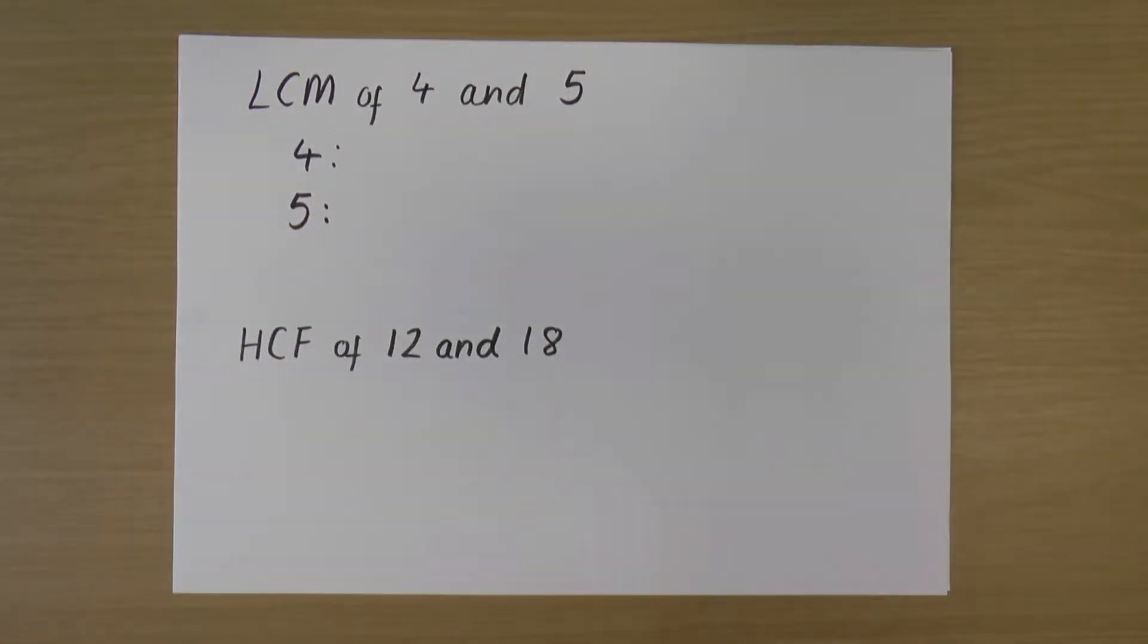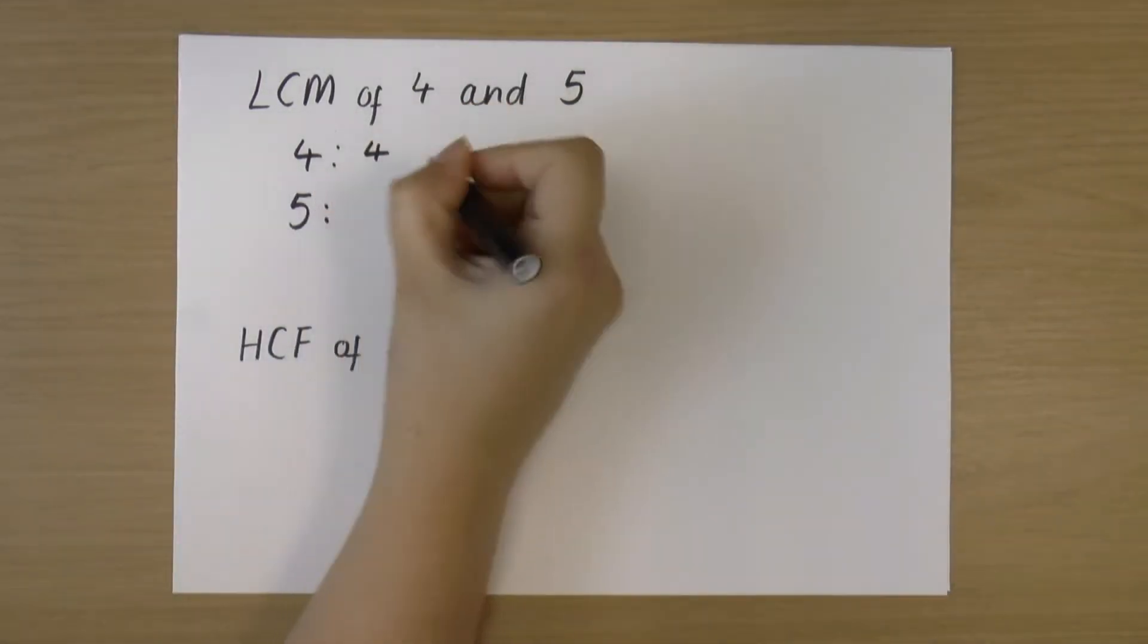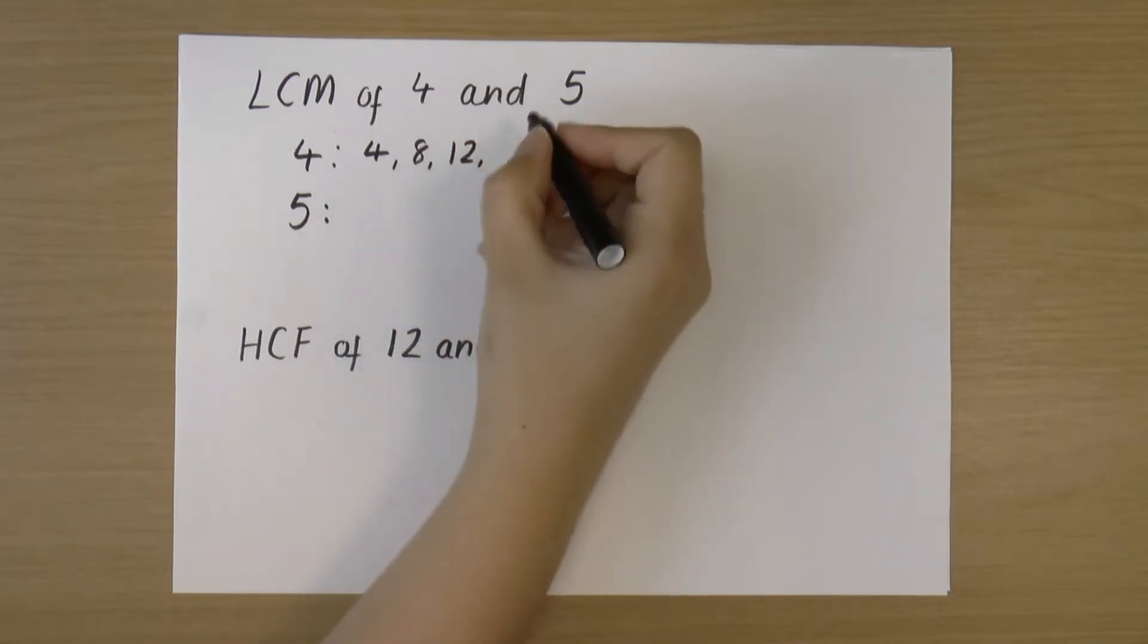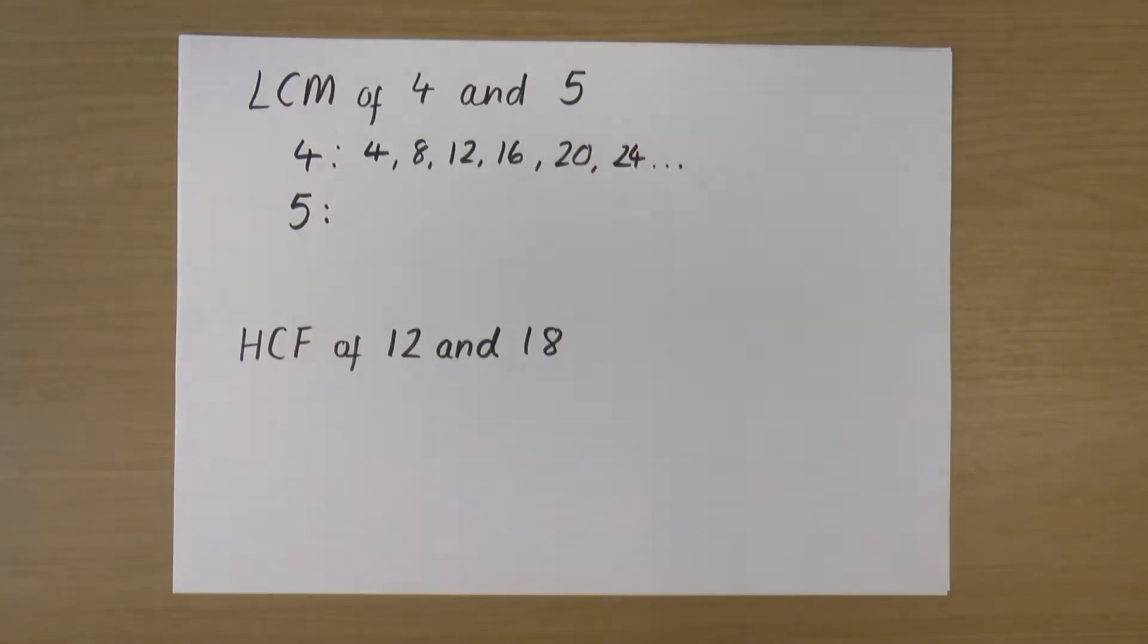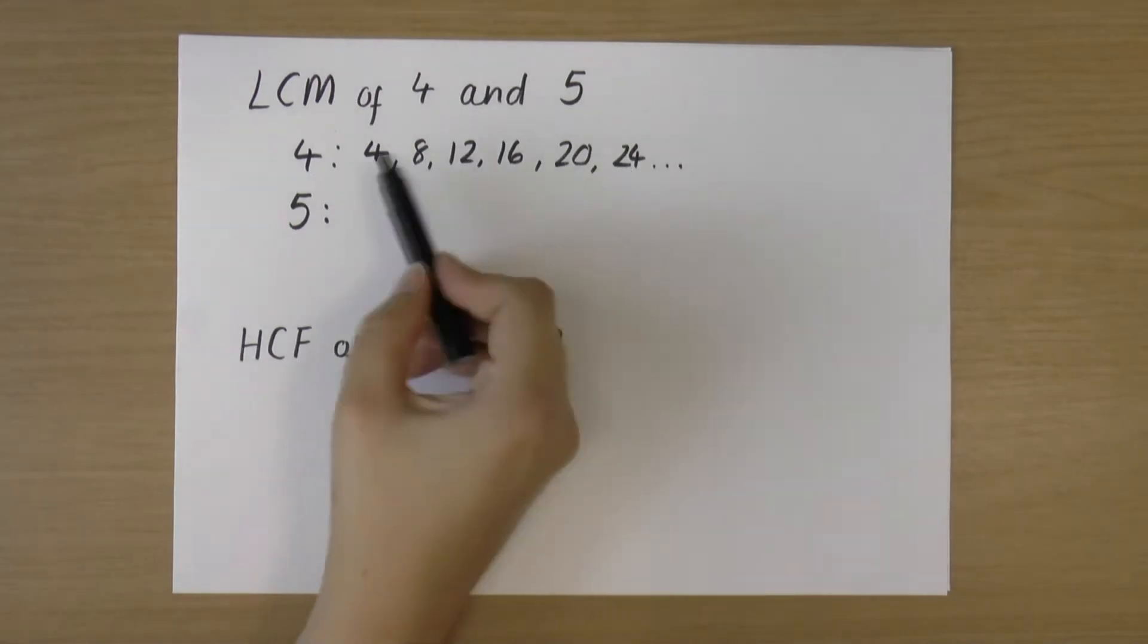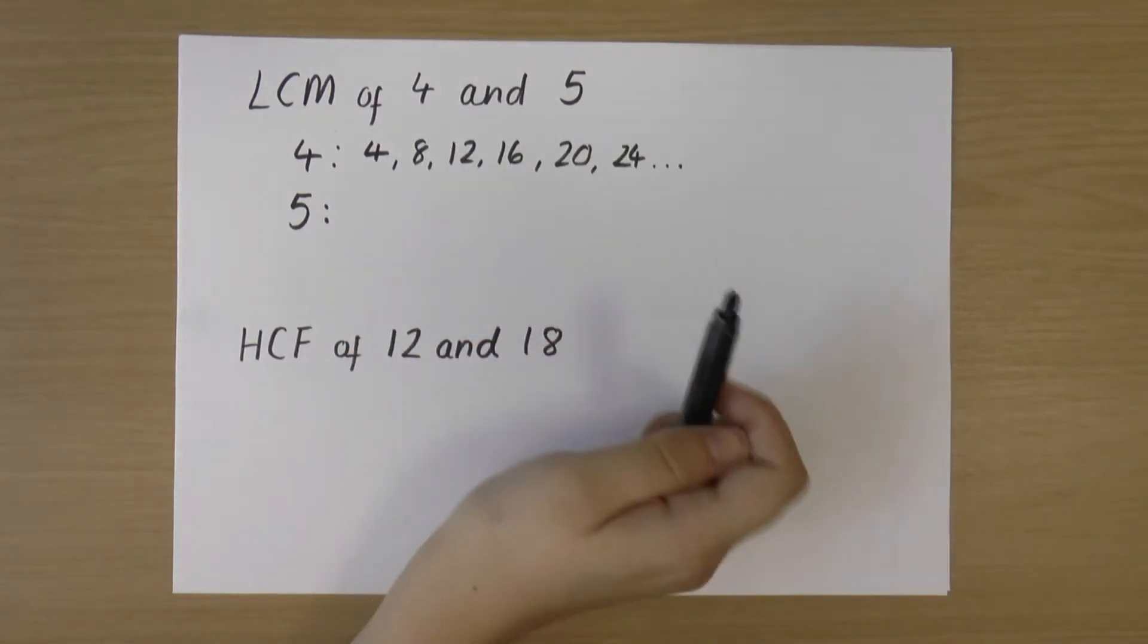So the multiples of 4 are just the 4 times table. We always start with the number. So 4, 8, 12, 16, 20, 24, etc. So I usually do a few and then just dot dot dot.